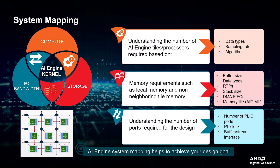The compute parameter identifies the number of AI-Engine tiles or processors required for running the algorithm design, and storage describes memory requirements such as buffer size, local memory of the AI-Engine, non-neighbor tile memory, or DMA size. Input and output bandwidth is used to identify IO requirements such as the number of PLIO ports, clocking, and buffer or stream interfaces. Analyzing the design based on these mapping parameters before implementation helps to achieve your design goal.